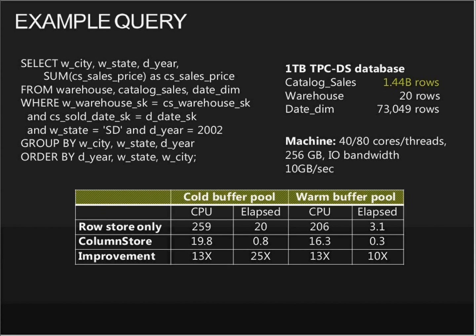Here's a typical query on a database with 1.44 billion rows, a warehouse table with 20 rows, and 73,000 rows of training dates. Running this on a machine with 80 cores, 256 GB of memory, and a 10 Gbps network: normally this takes 259 seconds. Turn on column store and it takes 19 seconds. Once data is warm in the buffer, I've seen tests where it drops to two or three seconds. Massive amounts of time savings — and you get concurrency benefits too, since once the table is indexed in memory everyone benefits.